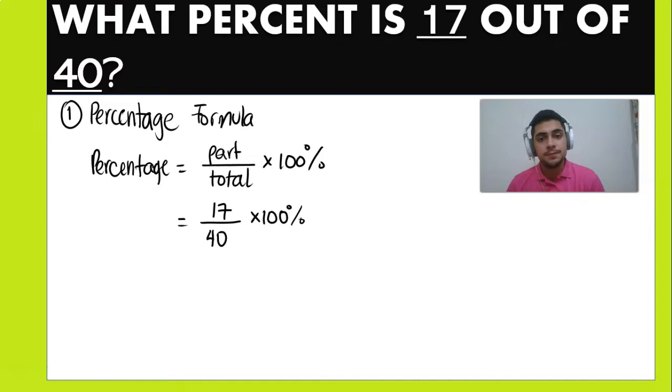So in this case, we're going to be doing 17 divided by 40, and that's going to be a value of 0.425. And then we have to multiply by 100 percent.